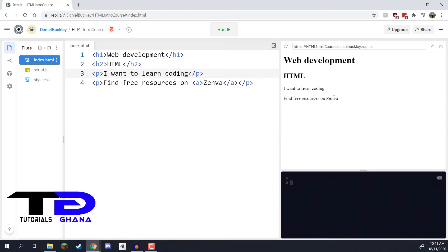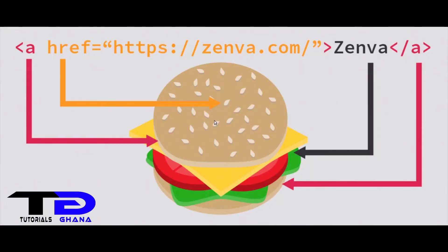When we click Run, clicking on 'Zenva' does nothing — because we haven't told the link where to go. We need to tell it where we want to navigate by assigning an attribute to the tag. In HTML we can give tags attributes, which is like providing extra information the tag needs. For a link, we need to give it the `href` attribute, which tells the tag where to navigate when clicked.